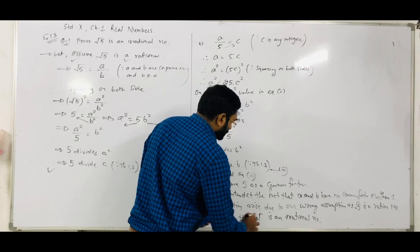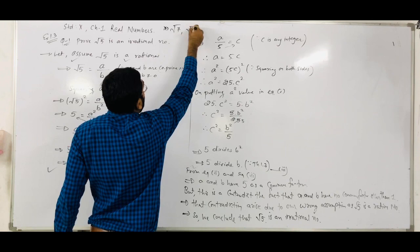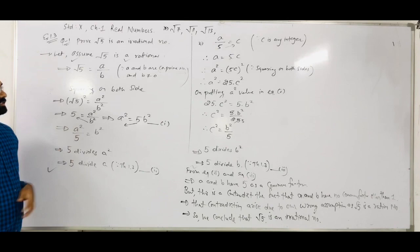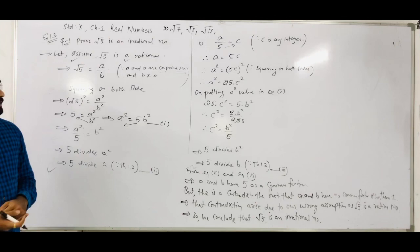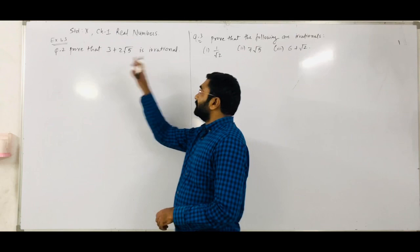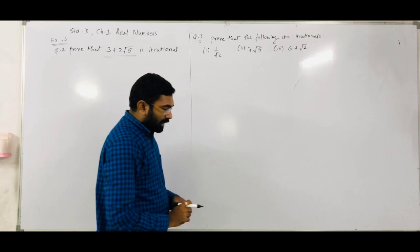That way we can prove the irrationality of any numbers. Many other sums may be asked — prove root 7 is irrational, root 11 is irrational, root 13 is irrational. For all these irrational numbers you have to prove them the same way. It is very easy and most probably asked in an examination for three marks.